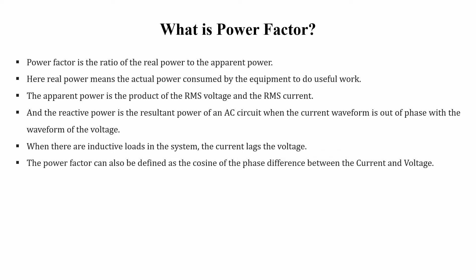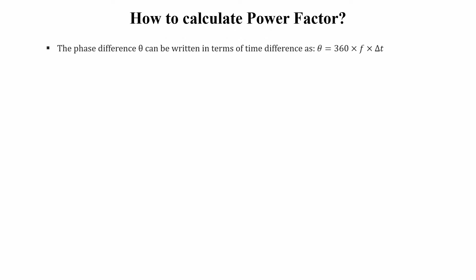The power factor can also be defined as the cosine of the phase difference between the current and the voltage. If the phase difference between voltage and current is theta, then the power factor can be written as cos(theta). The phase difference theta is connected to the time difference and can be written as theta = 360 × f × Δt, where f is the frequency and Δt is the time delay between the voltage and current waveforms.